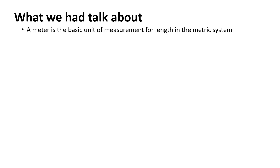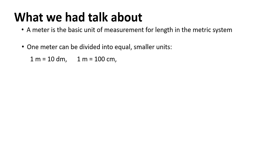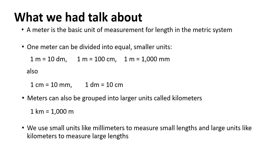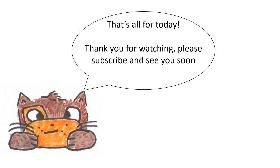Let's repeat what we have talked about today. A meter is the basic unit of measurement for length in the metric system. 1 meter equals 10 decimeters, 100 centimeters, and 1,000 millimeters. Also, 1 centimeter equals 10 millimeters, and 1 decimeter equals 10 centimeters. Meters can also be grouped into larger units called kilometers: 1 kilometer equals 1,000 meters. We use small units like millimeters to measure small lengths, and large units like kilometers to measure large lengths. That's all for today — thank you for watching, please subscribe, and see you soon in the next Math Adventure!